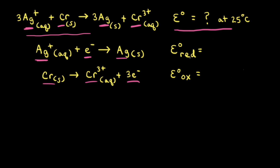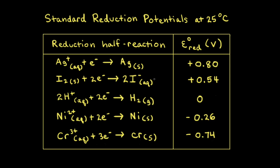Next, we need to find the standard voltages for our two half reactions. To do that, we can consult a standard reduction potential table, which shows standard reduction potentials for some reduction half reactions at 25 degrees Celsius. These standard reduction potentials are all compared to the reduction of H⁺ ions. We need the reduction potential for the reduction of silver cations to form solid silver.